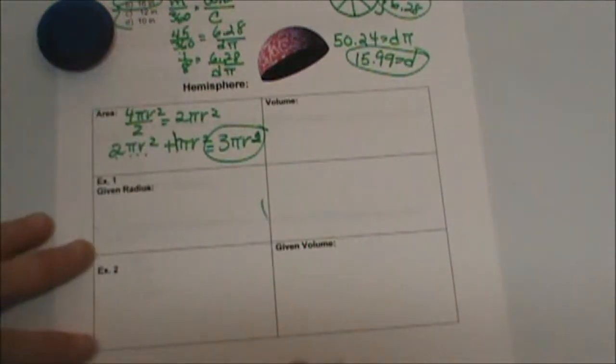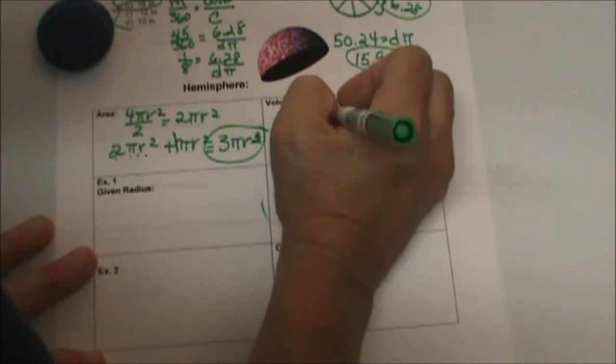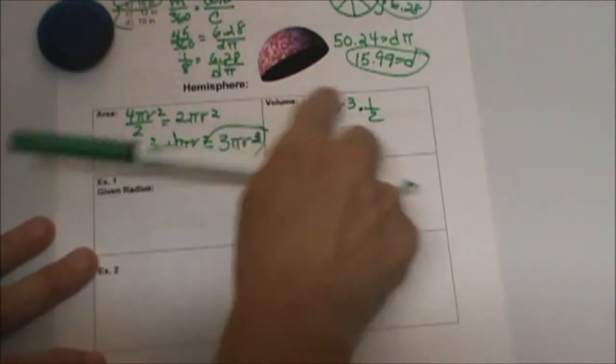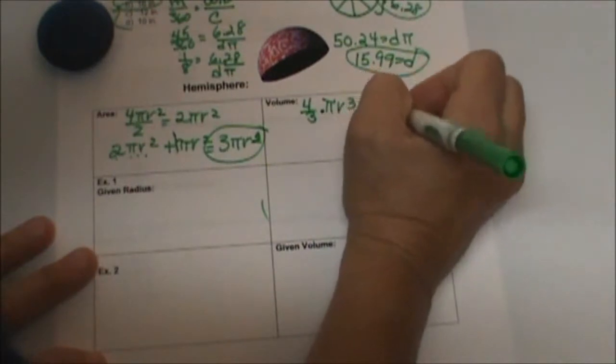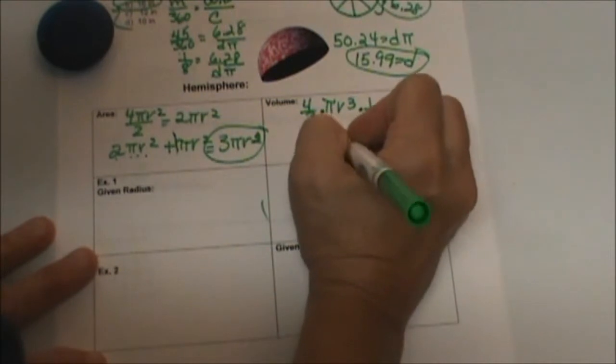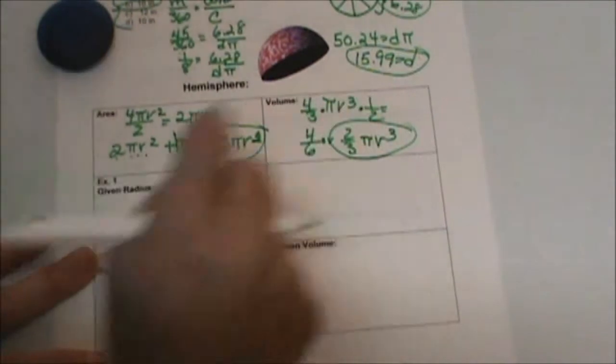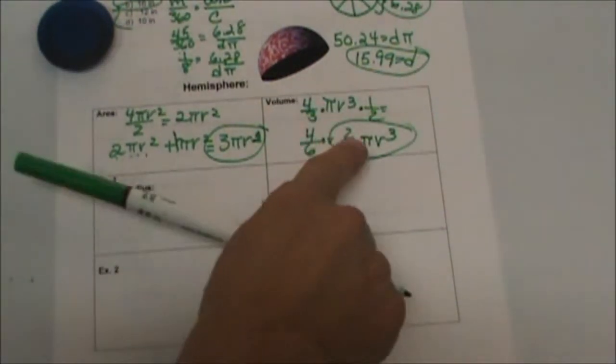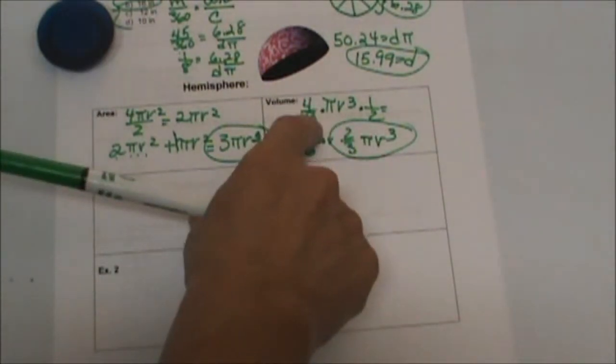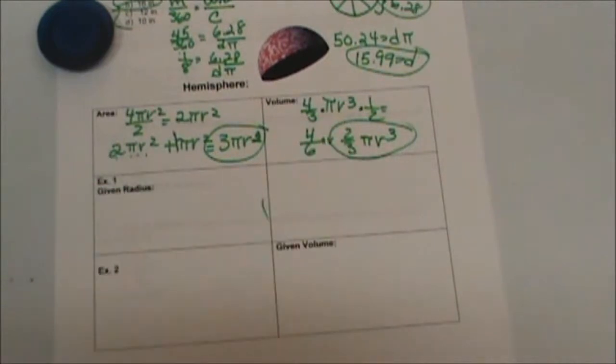So we're going to take 4 thirds pi r cubed times a half. We're just going to take half of that. That ends up being 4 sixth or 2 thirds pi r cubed. So that is the volume formula for a hemisphere. 2 thirds pi r cubed. If you forget, just take the 4 thirds and multiply it by half and get 4 sixth and reduce it to 2 thirds.